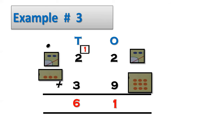Now here we have another example. Here we are going to add 22 and 39. In number 22, 2 is in the 1s column and the other 2 is in the 10s column. In number 39, 9 is in the 1s column and 3 is in the 10s column. Do you know what column we will add first? Yes, we will add the 1s column first, which is 2 and 9. First we will add 2 and 9.